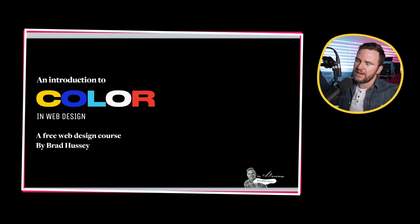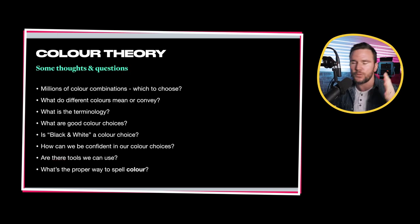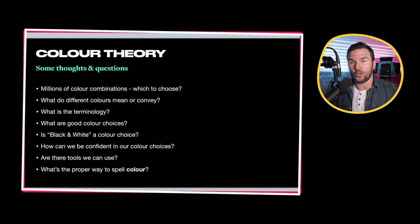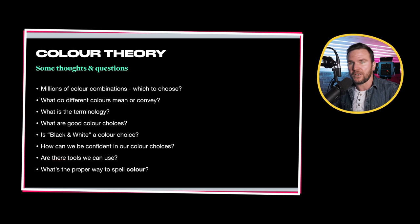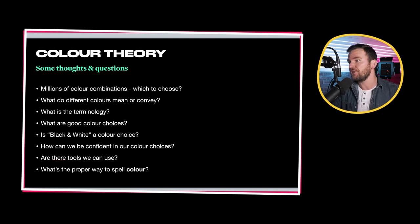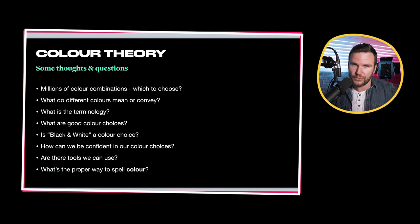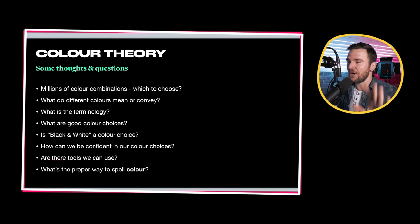So, color theory. You're going to see me switching back and forth with the spelling of color — with a U, I'm Canadian, I think that's the proper way of spelling it. Americans drop the U. So I'm going to go back and forth between 'colour' with the U, staying true to my roots, and 'color' without the U, because most of you are American and I don't want to upset you too much.